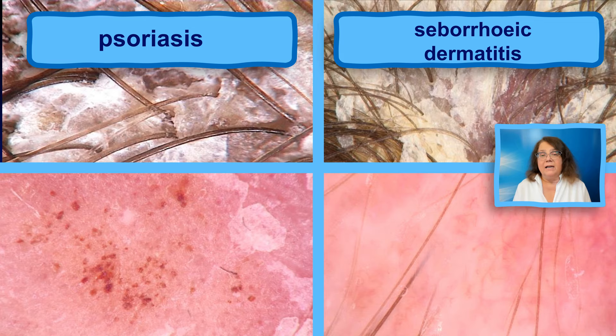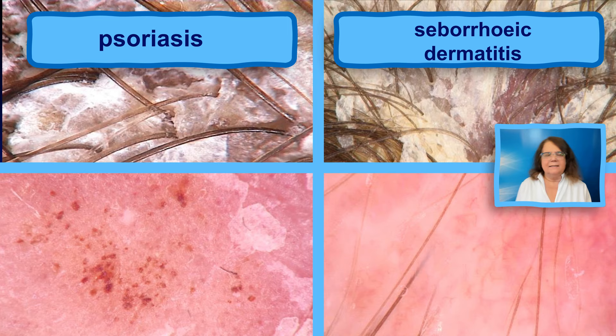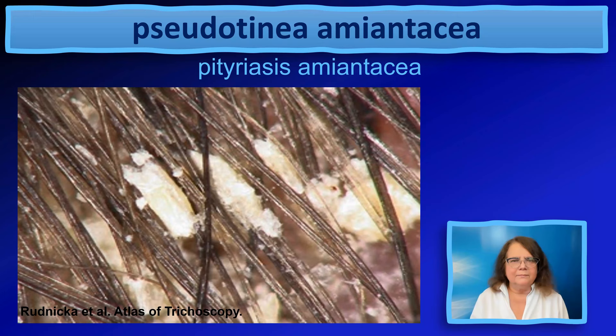Both in psoriasis and in seborrheic dermatitis we will see diffuse scaling. It is usually thicker in psoriasis and a little bit thinner in seborrheic dermatitis. It may have a tendency to be more yellowish in seborrheic dermatitis, but again this difference is quantitative rather than qualitative.